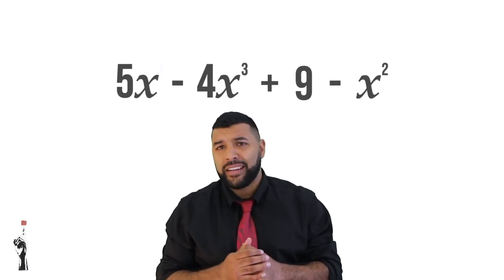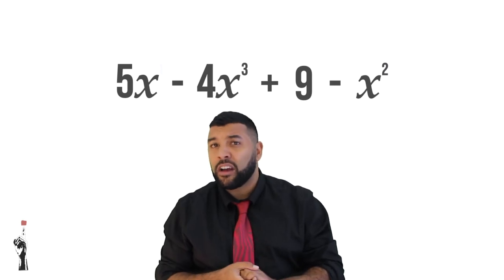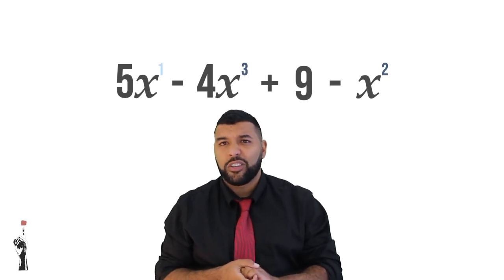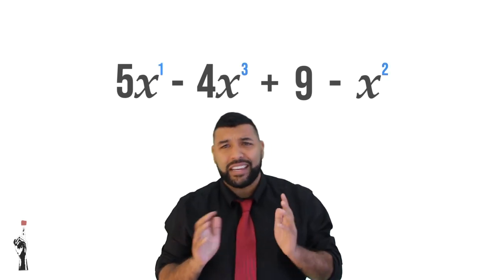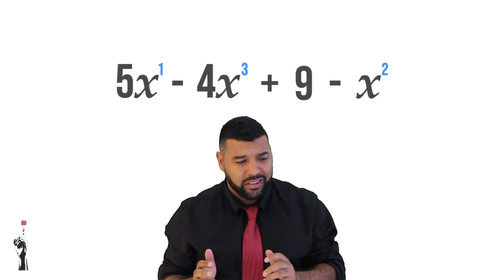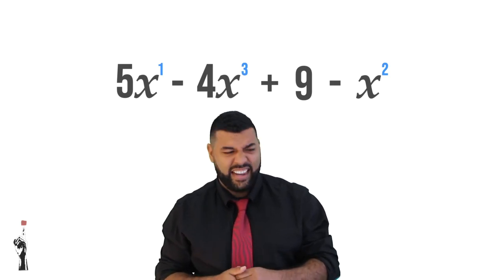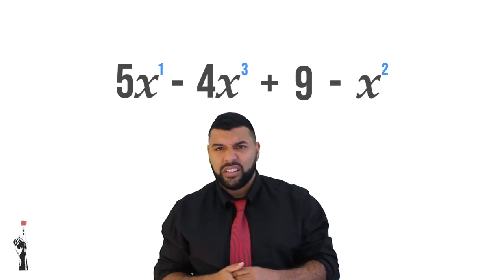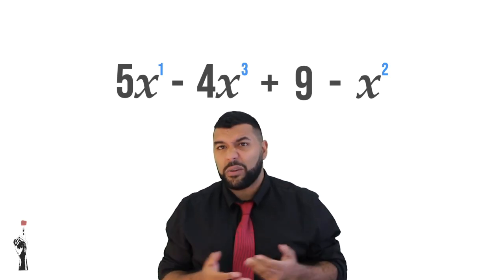What do I mean? If you look at the exponents on the X, you will notice that it's a bit out of order. We first have X, then X cubed, then no X, and then X squared.